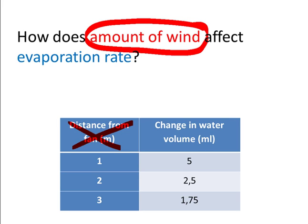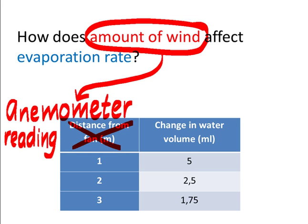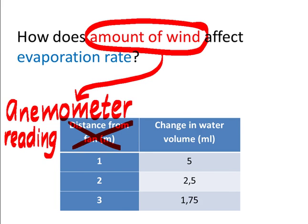So if instead of using distance from fan as an indicator of amount of wind, if we could actually have a little machine which measures amount of wind at certain places, we call such an instrument an anemometer, then we would no longer have that barrier between what we measure and what we're really wanting to know because we'd be measuring directly what we want to know.